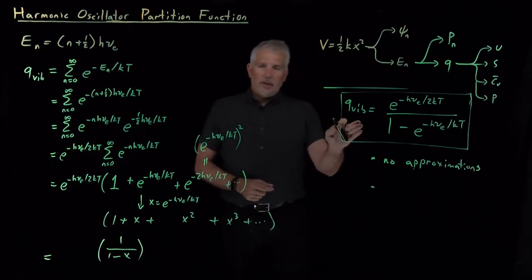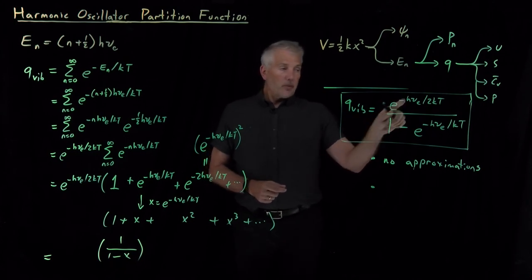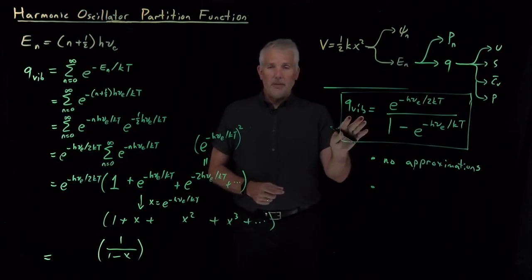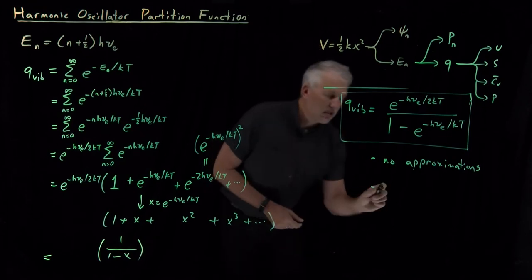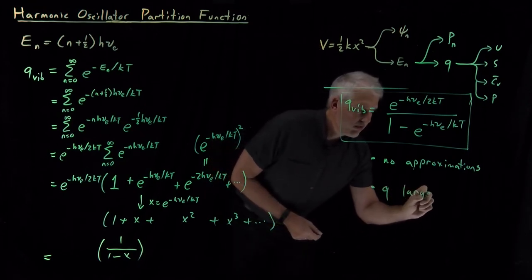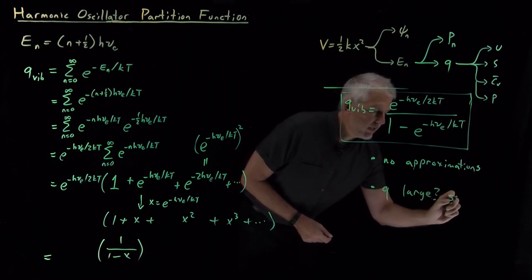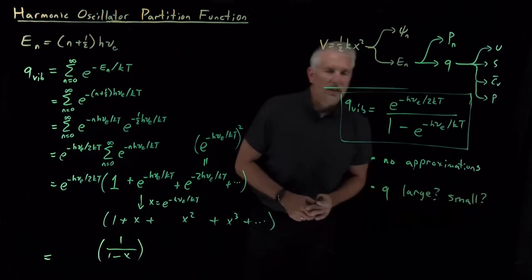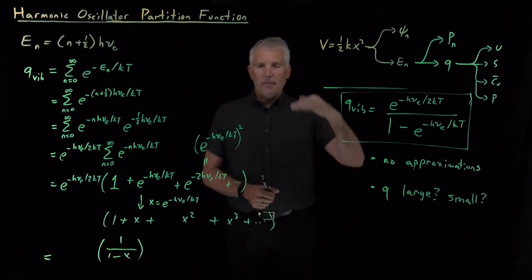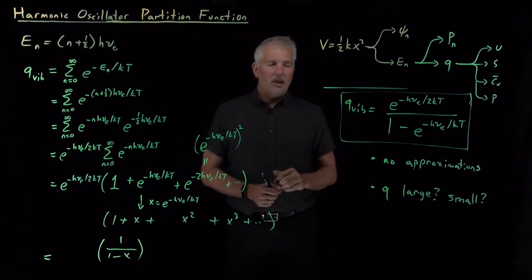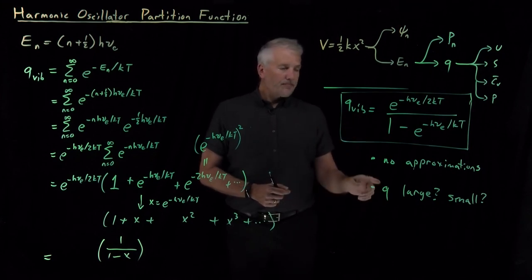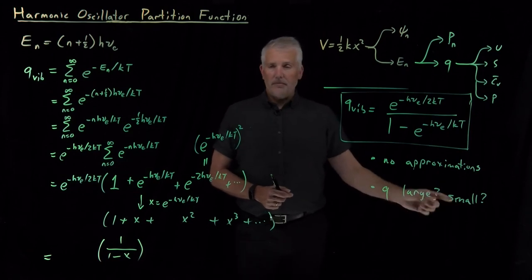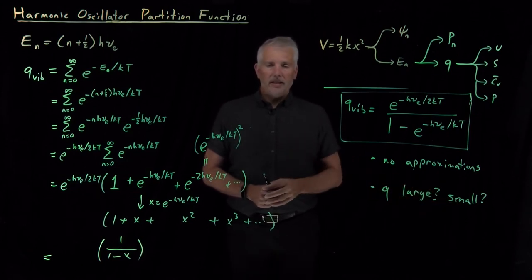The next thing we can discuss about the partition function is what it means. We can plug some values in and obtain numbers, and we'll do that. But really, what we're after is the question, is this partition function large or is it small? And thinking back to what the partition means physically, that's telling us if partition function is large, that means many, many of the states on this energy ladder are occupied. Quite a few of the excited states for the harmonic oscillator are occupied. But if Q is small, that means very few of the states are occupied, maybe just the ground state is occupied.